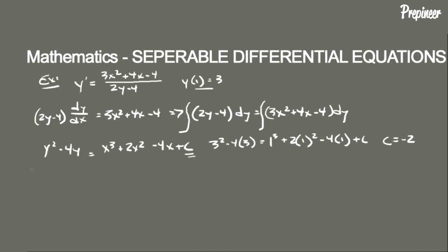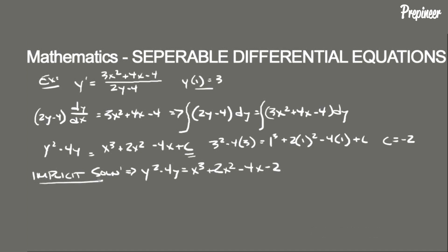With this we can determine our implicit solution. The implicit solution is y squared minus 4y equals x cubed plus 2x squared minus 4x minus 2.